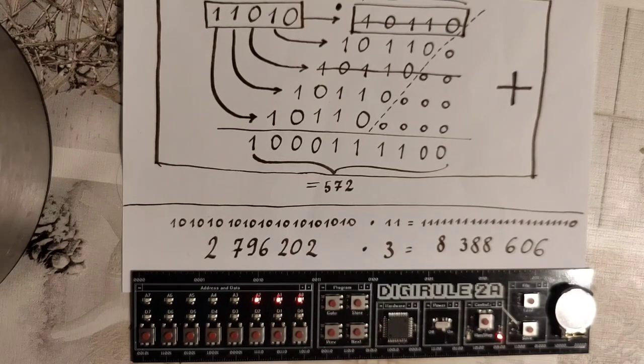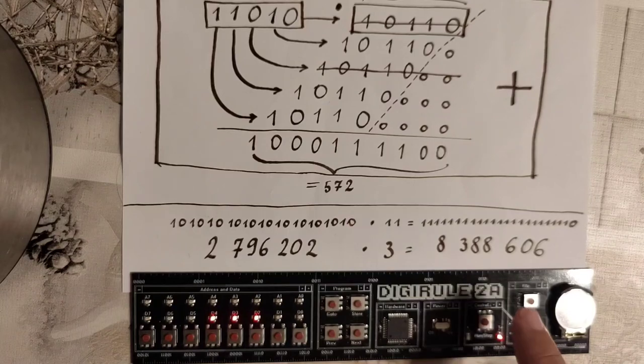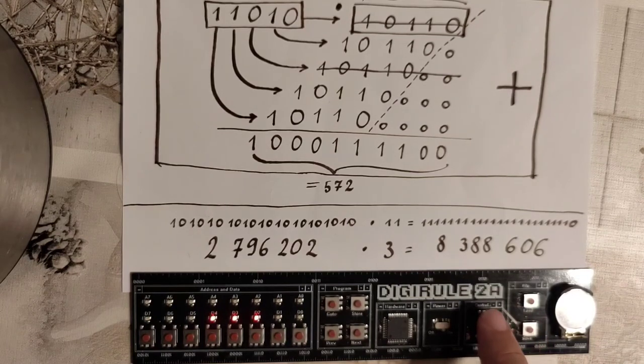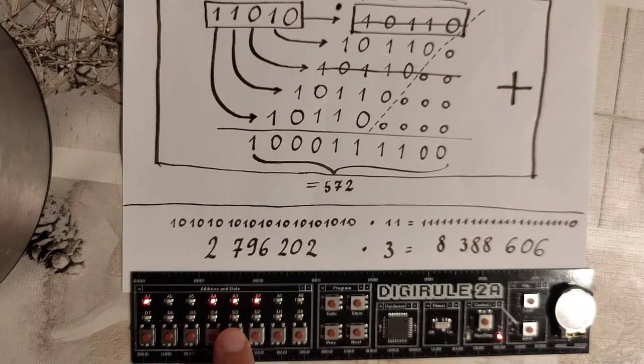And we are now ready to do our multiplication. We return to position 0 in the address field and now we can just simply run our program and in the blink of an eye the multiplication has been performed. We can now go to position 8.